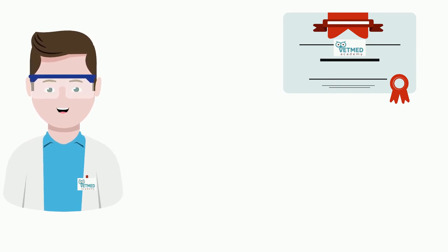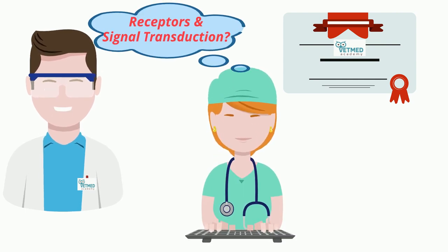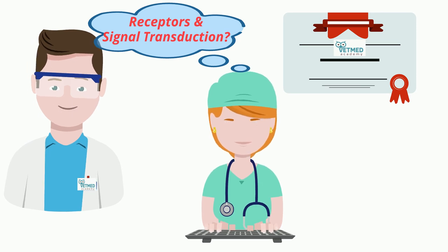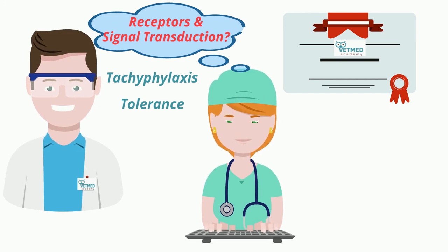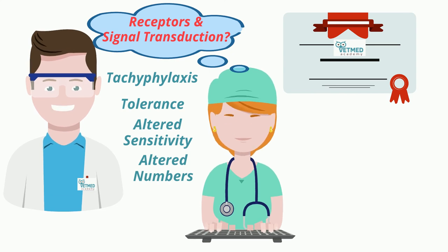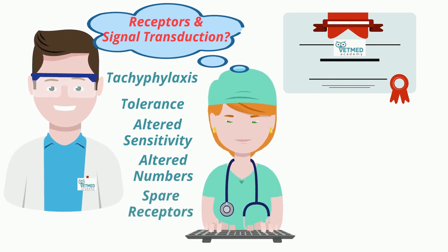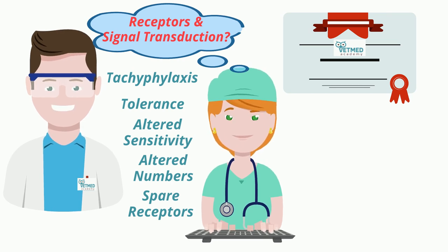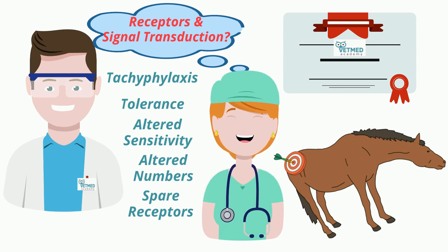In our previous discussion of receptors and signal transduction, we reminded you of the basic types of receptors. Now we're going to look at how receptors and signal transduction can respond to our therapy. We'll discover the phenomenon of tachyphylaxis, intolerance to drugs, and how receptors can adjust their sensitivity and numbers in response to the presence or absence of stimulating transmitters and hormones. Finally, we'll discuss the special intrinsic feature of some systems called spare receptors that facilitate a rapid activation and deactivation of a signal in some systems. All the while, we'll note how important these concepts are to the clinician.